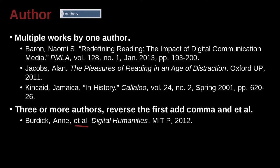And this is Digital Humanities, which must be a book. How do I know it's a book? Because there are no quotation marks and it's using italics. Then we have M-I-T-P, and the P must be Press — MIT Press. Comma before, comma after, MIT Press, 2012 is the year, and end with a period.